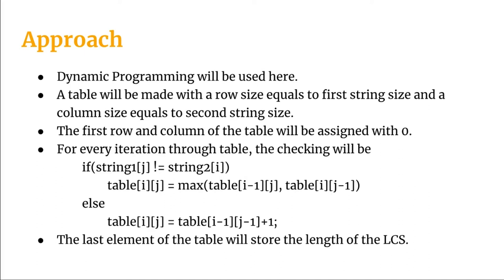We are going to use dynamic programming here. Dynamic programming has a property called overlapping substructure — if some computation is being done more than once, we will not repeat it. Instead, we store the result and utilize it later. For that, we are going to make a table with row size equal to the first string size and column size equal to the second string size. The first row and first column of the table will be assigned with 0.